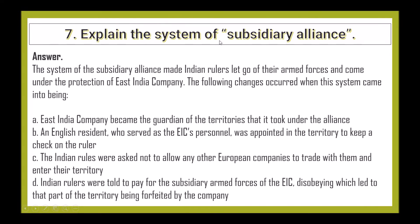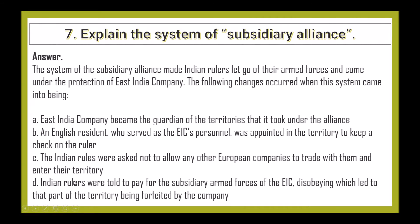Next question: Explain the system of Subsidiary Alliance. The system of Subsidiary Alliance made Indian rulers let go of their armed forces and come under the protection of the East India Company. The changes that occurred: the EIC became the guardian of the territories under the alliance; an English Resident, serving as EIC's representative, was appointed in each territory to keep a check on the rulers; Indian rulers were asked not to allow any other European companies to trade with them or enter their territories; Indian rulers had to pay for the subsidiary armed forces of the EIC; and disobeying led to part of their territory being forfeited by the company.